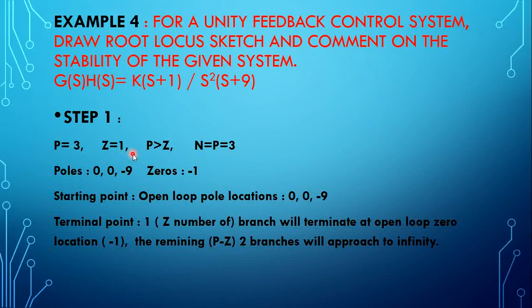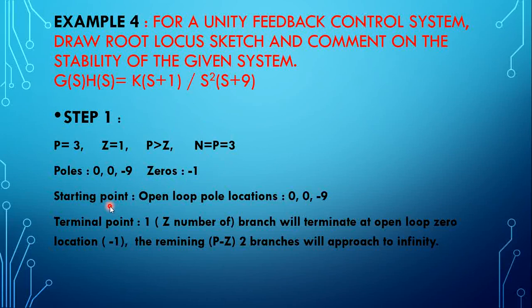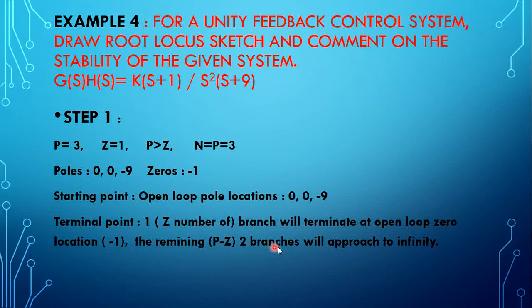Number of poles are 3, number of zeros are 1. So poles are greater than zeros. As per rule number 2, case 1 — where poles are greater than zeros — number of root locus branches equals number of poles, which is 3. All root locus branches start from open loop pole locations: 0, 0, and -9. Out of 3 branches, 1 branch terminates at zero location (-1), and the remaining 2 branches approach to infinity.